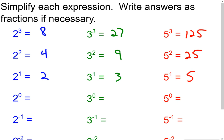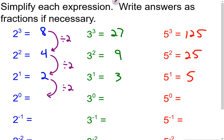Some of you may have figured this out already. Notice the pattern with the 2s: going from 2³ to 2² I divided by 2 — 8 divided by 2 is 4. From 4 to 2, I divided by 2 again. So going from 2¹ to 2⁰ I'm just going to divide by 2 again. 2 divided by 2 is 1. So 2 to the zero power equals 1. And it is.